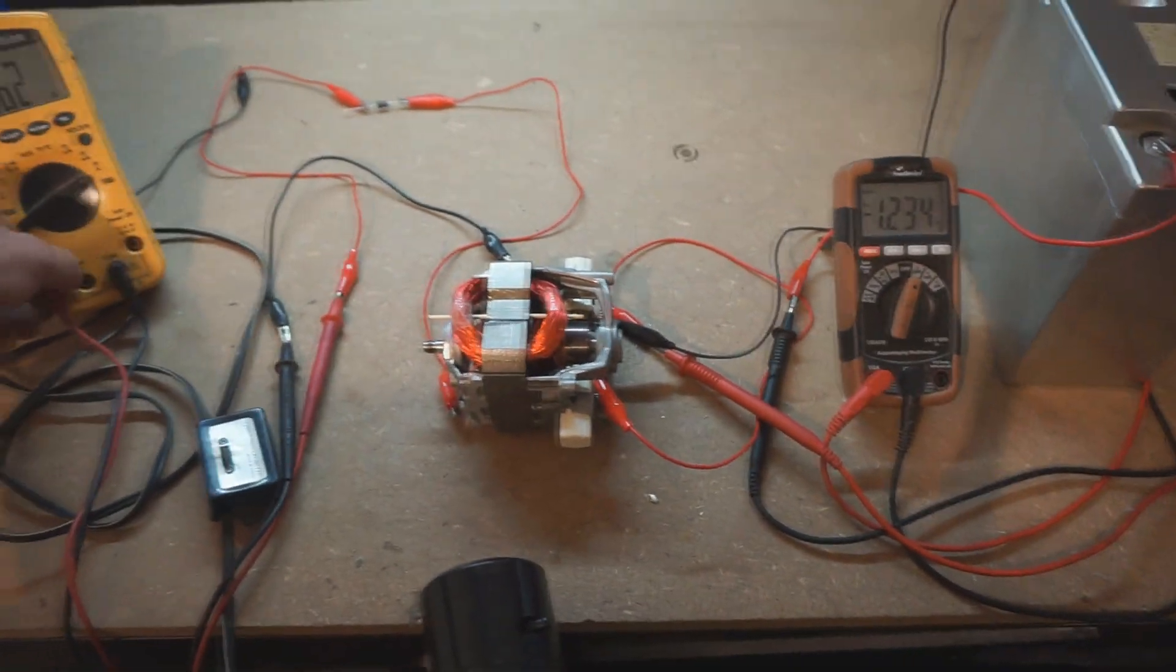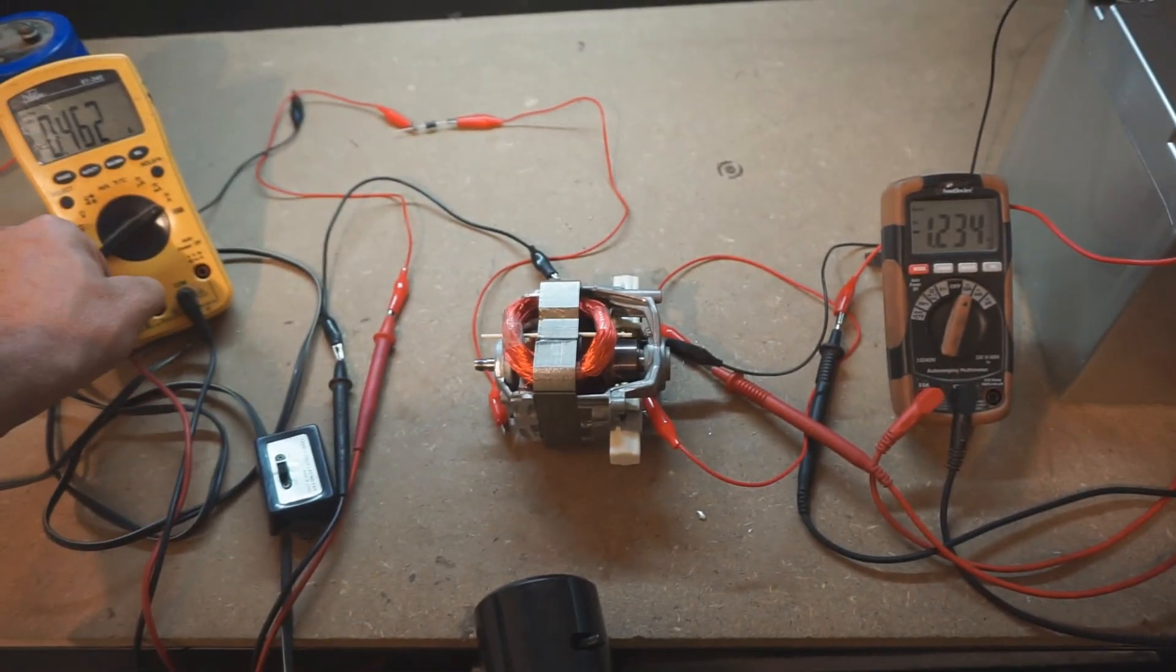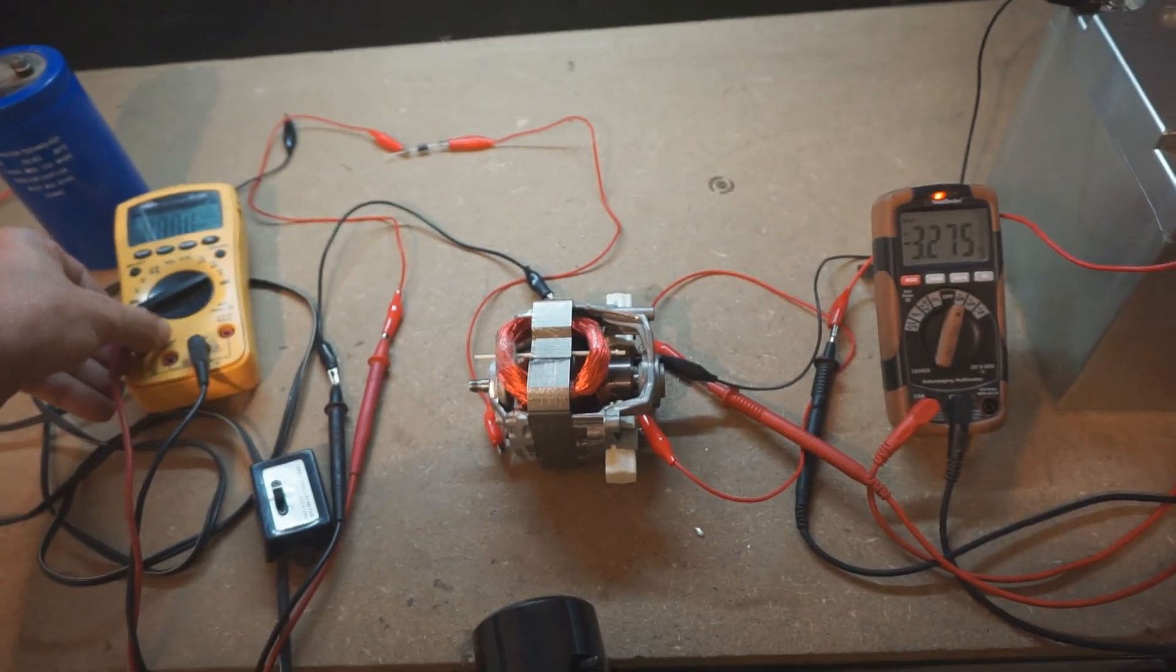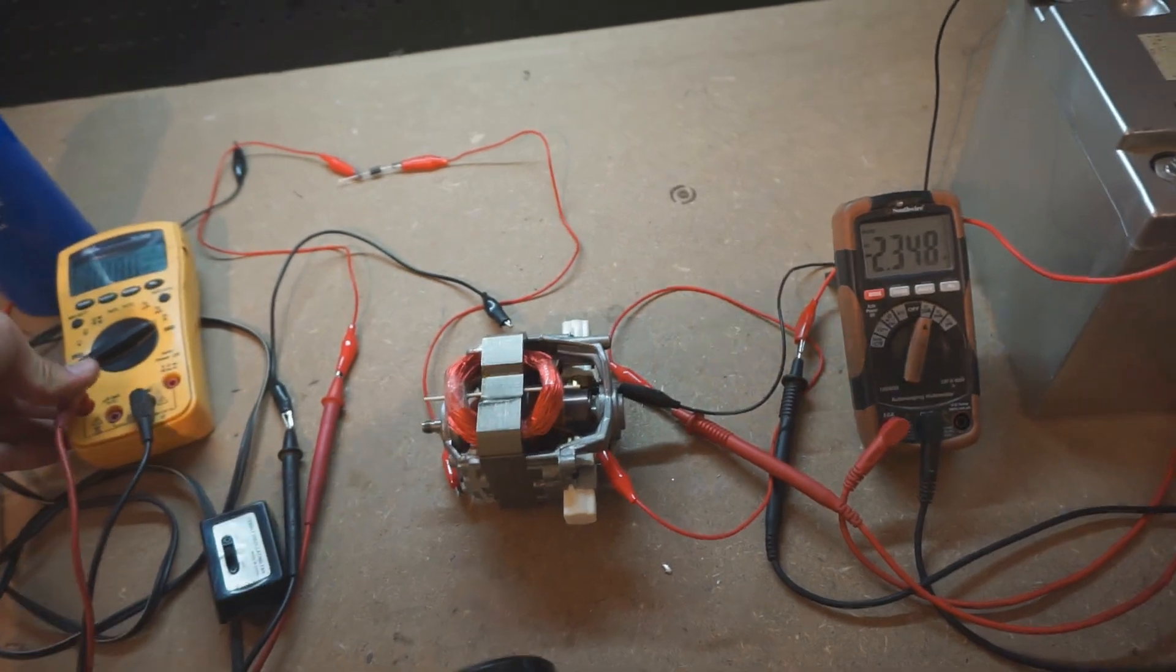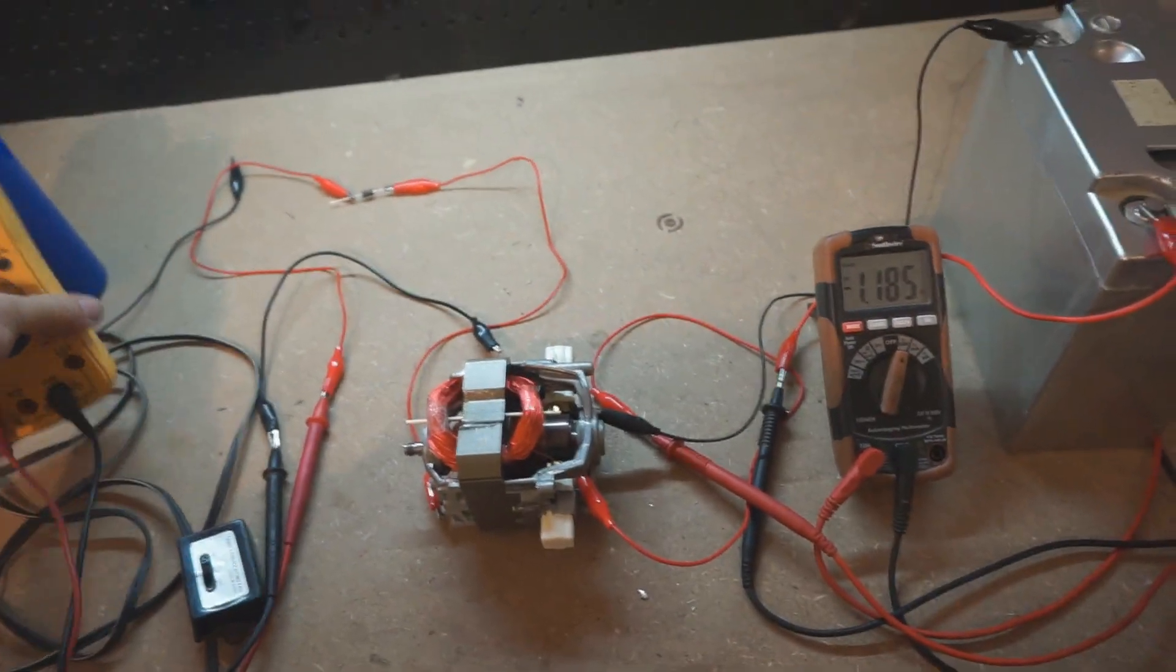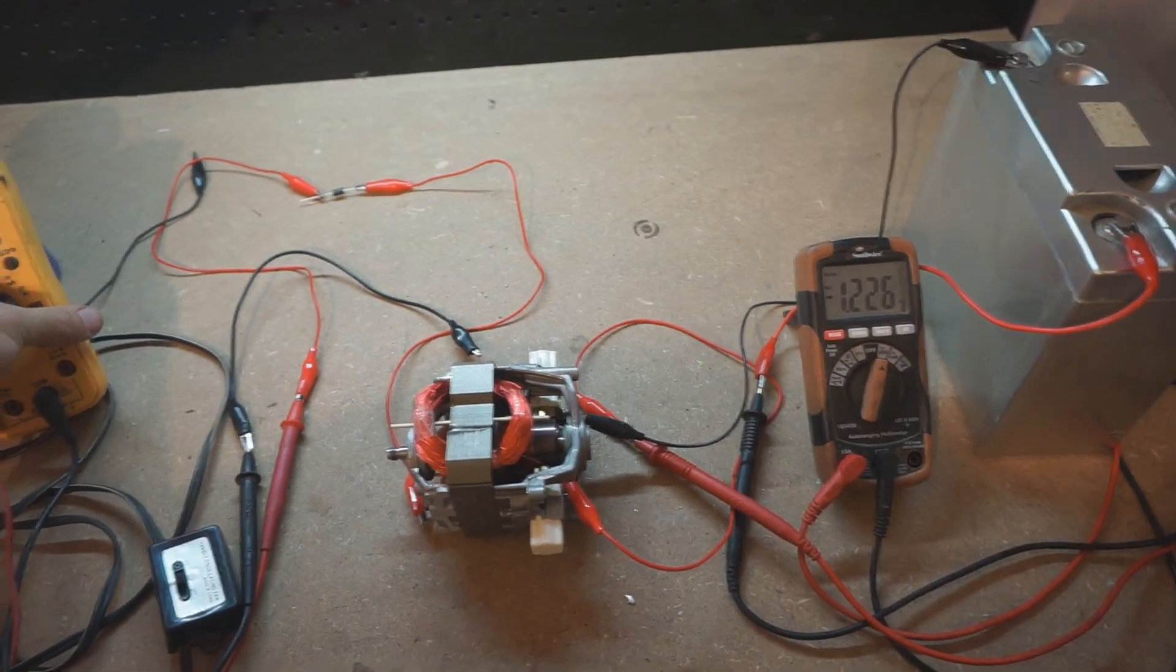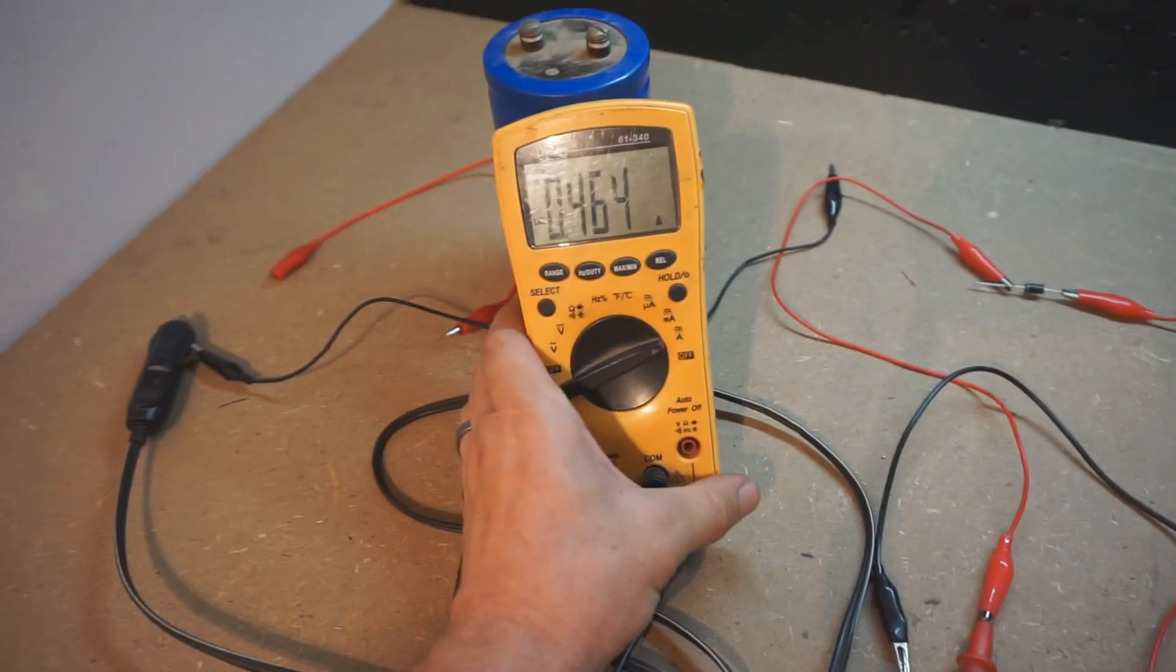I can go ahead and disconnect the multimeter and you'll see the current draw go back up when it's disconnected. When I dead short this it drops all the way down to 1.2 amps and it's giving an output over here of about half an amp.